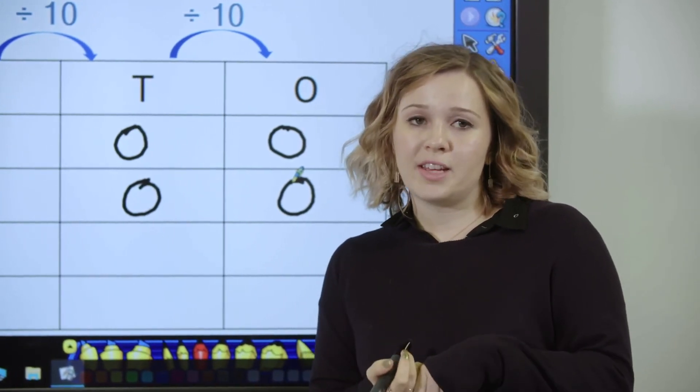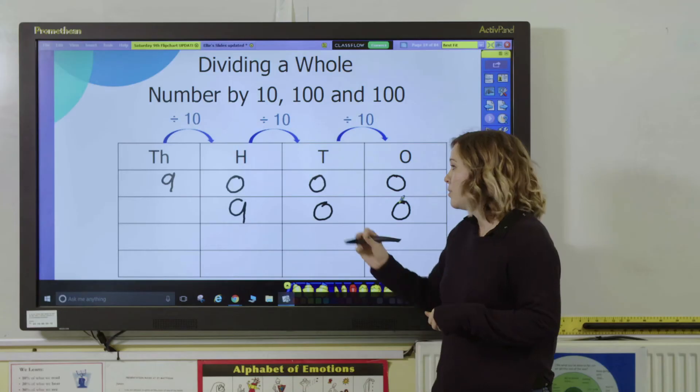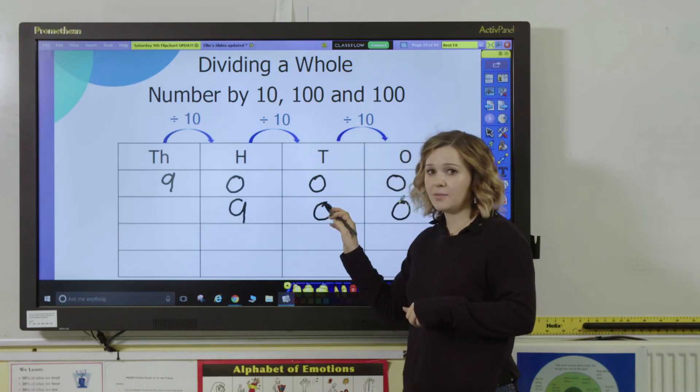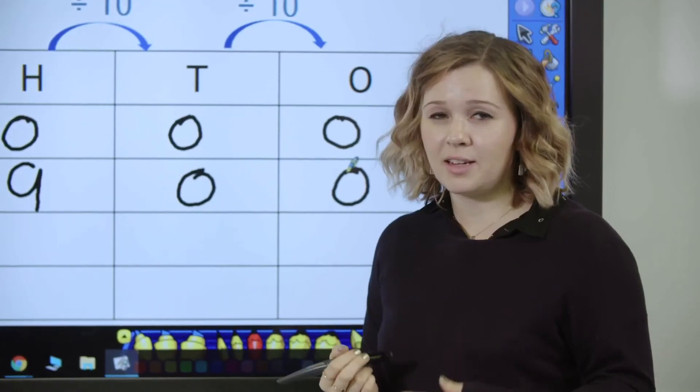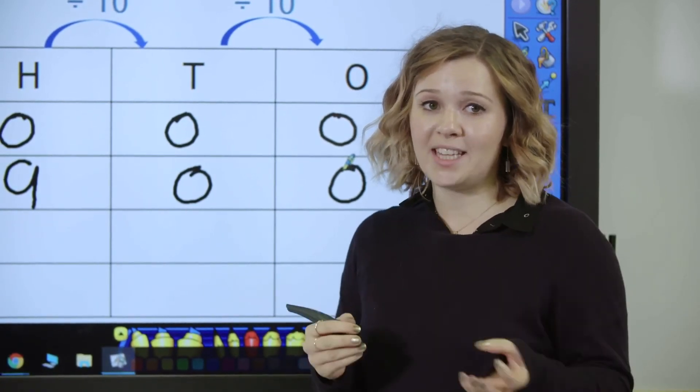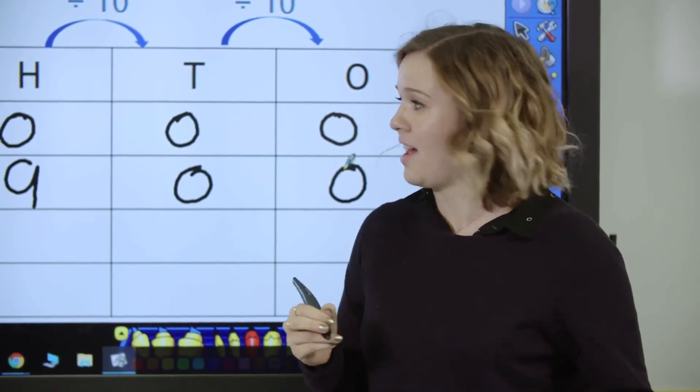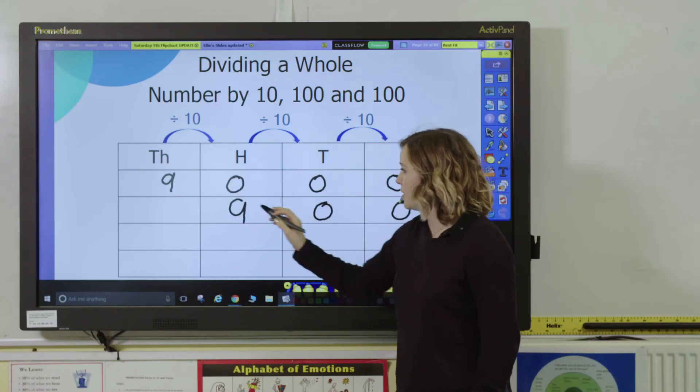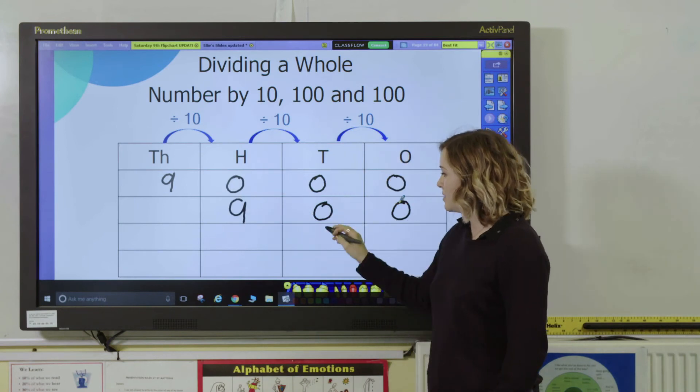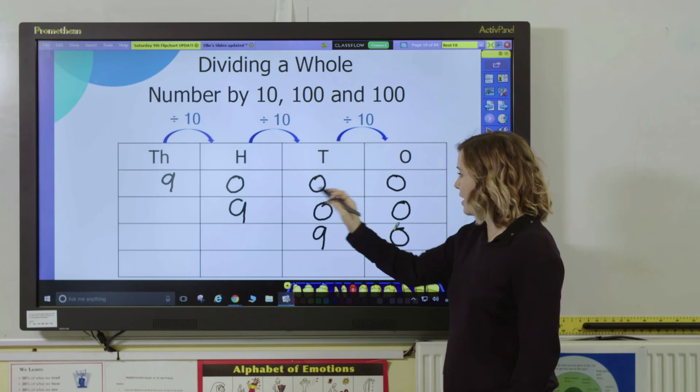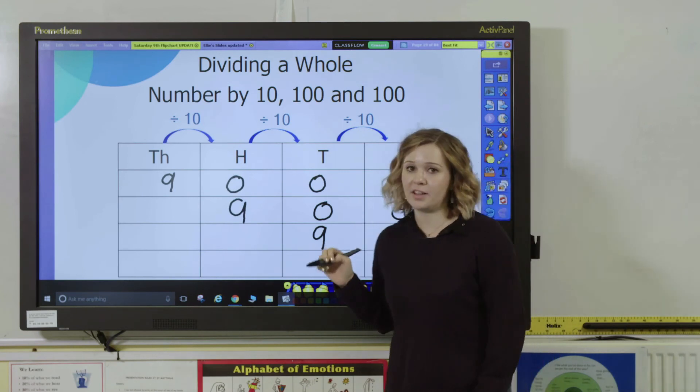Then when we move on to dividing by 100, pupils need to understand that the digits move two spaces to the right. You can reinforce this understanding by explaining that as well as dividing by 100, you're dividing by 10 and then by 10 again. So if I divide 9,000 by 100, my 9 moves two places over and goes into the tens column. So 9,000 divided by 100 is 90.